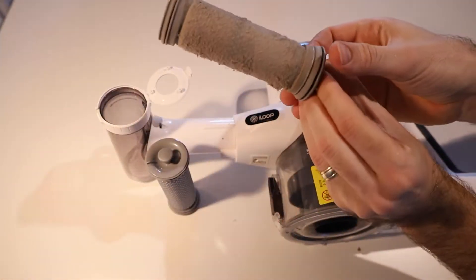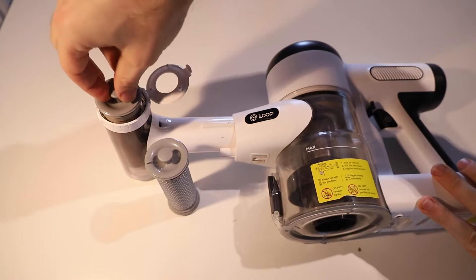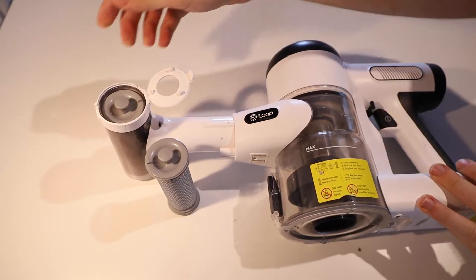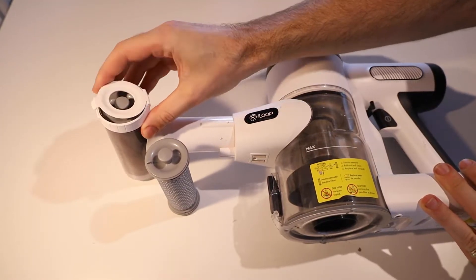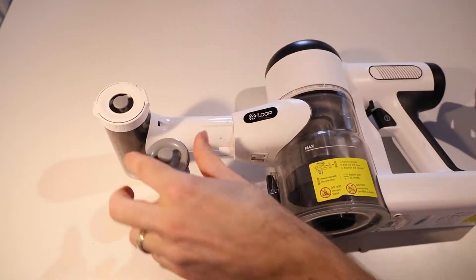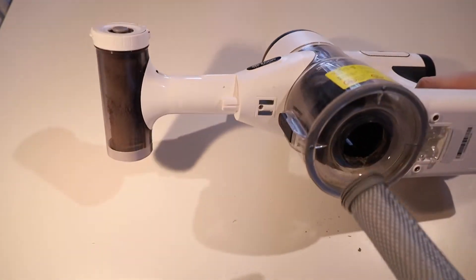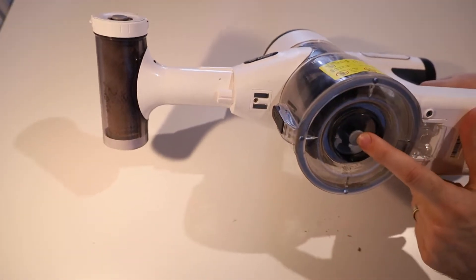We'll slot it into our filter cleaning attachment. And this attachment does come with the vacuum. We'll close that up. We'll put our clean filter in. We should always have a filter in here. So we're just pushing it in until it clicks.